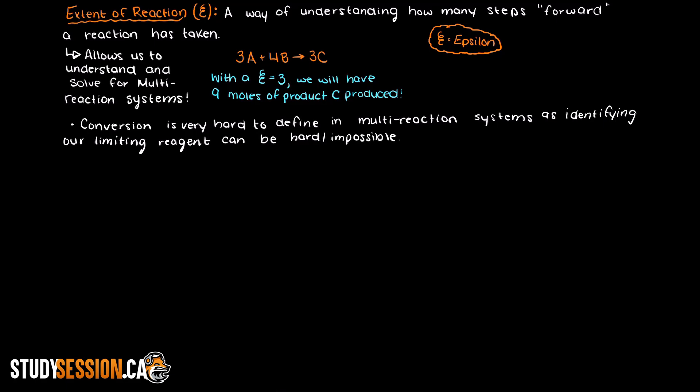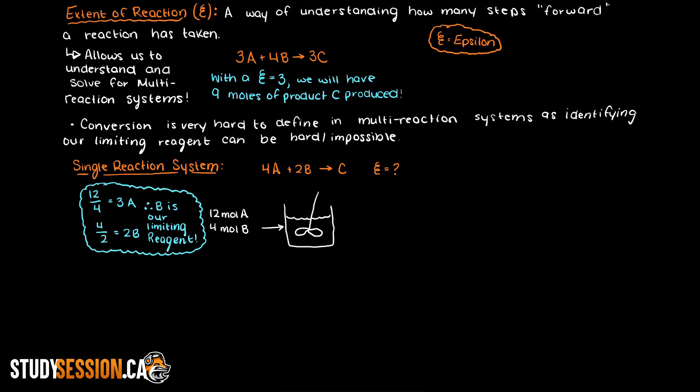So let's begin with a simple one reaction system example so you can gain an intuitive understanding but then we will talk about a multiple reaction system. Let's say that we are observing this general reaction here. 4 moles of A plus 2 moles of B produces 1 mole of C. And let's say that into our batch reactor here we have 12 moles of A and 4 moles of B. Clearly we will run out of our B reactant much quicker than our A reactant. Therefore B is going to be our limiting reagent.